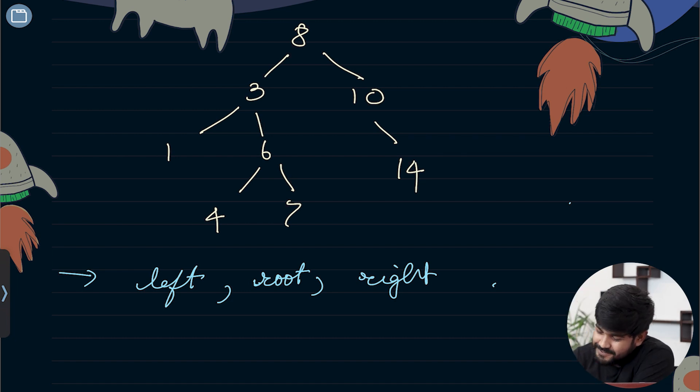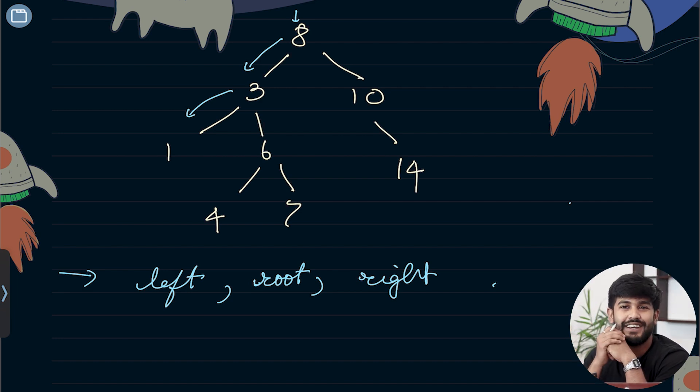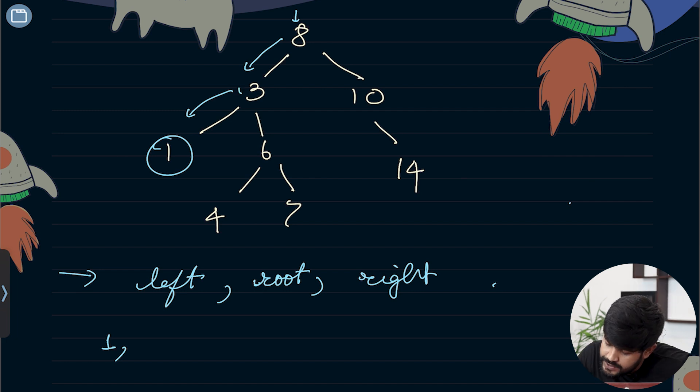Let's start off. I start with 8 and it asks, did you visit my left? Not yet. So I move to the left, which is 3. 3 asks, did you visit my left? I move to 1. 1 asks, did you visit my left? You don't have a left, so can I visit you? Yes. I visit 1. Now as the left of 3 is visited, we can visit 3.